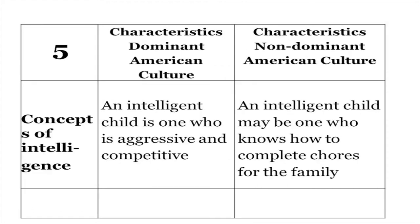Concepts of intelligence differ. To the dominant white middle class culture, an intelligent child is one who's aggressive and competitive. For the non-dominant culture, an intelligent child may be one who knows how to complete chores for the family. This is a very big difference in how the dominant American culture views children.